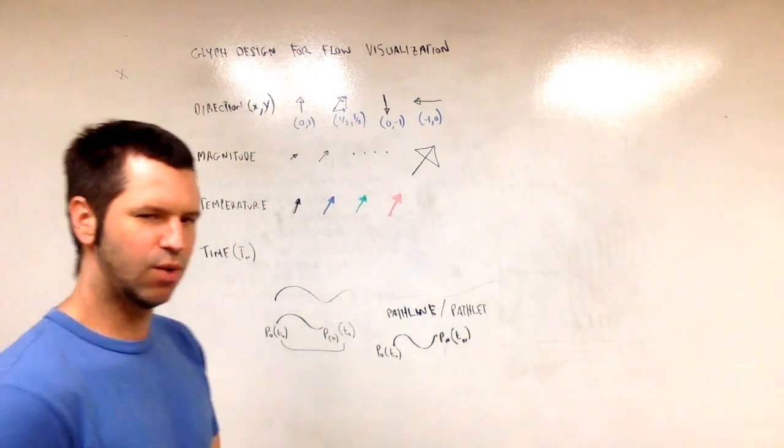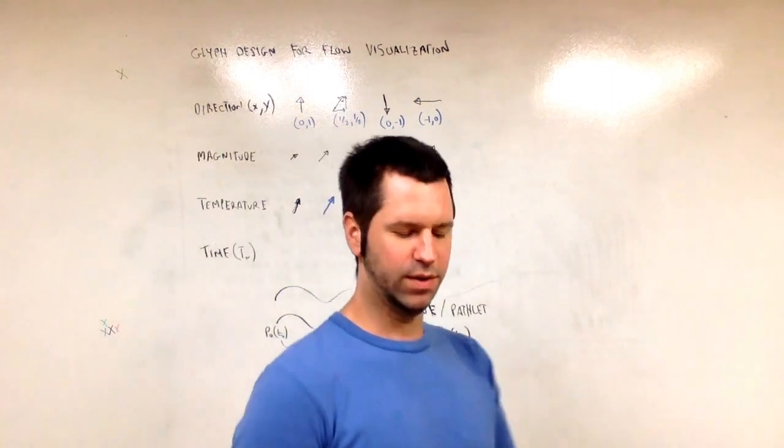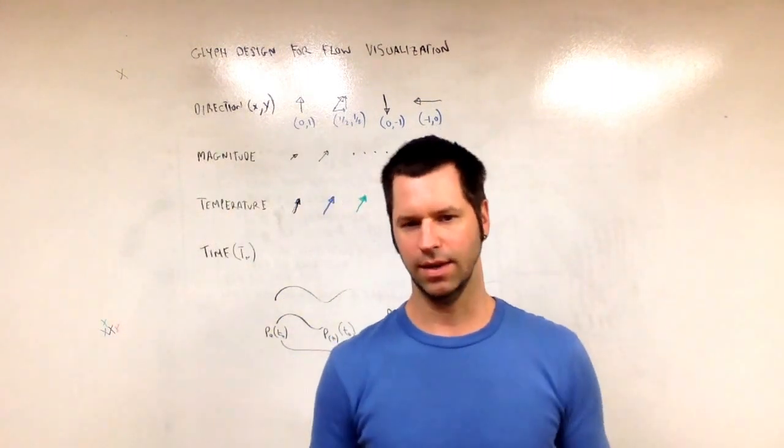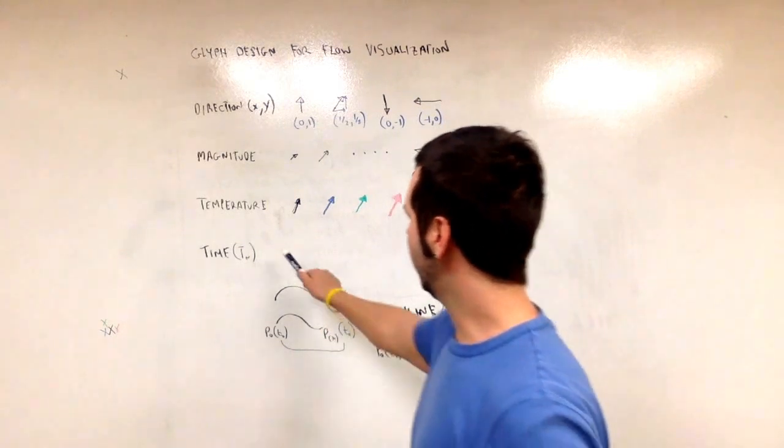So a pathlet or a path line is always tangent to the flow in an unsteady case. So what would that look like here?